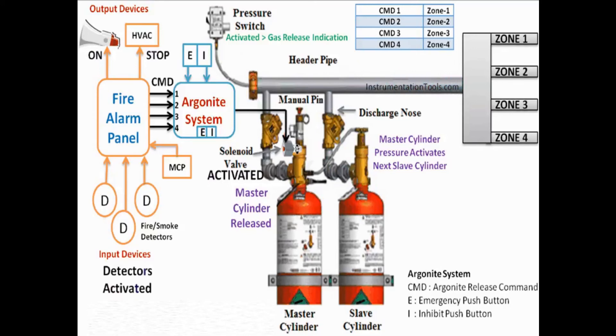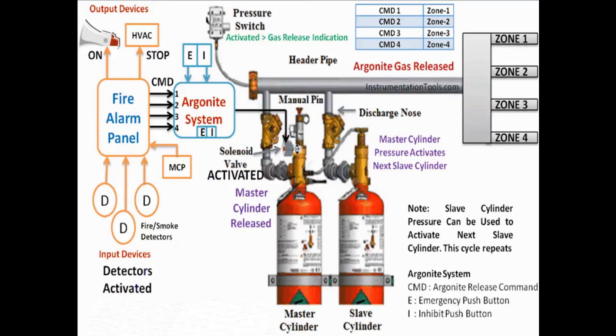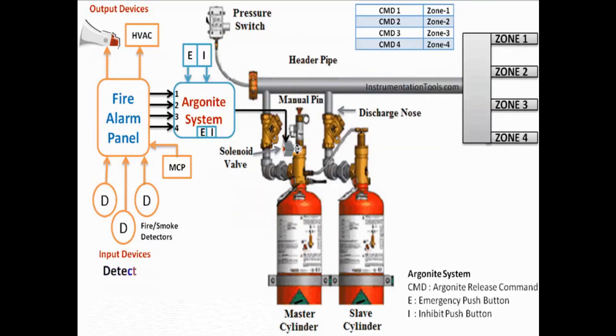Pressure switches are installed in the main discharge line or specific zones. Argonite gas release indication will be taken from these pressure switches.